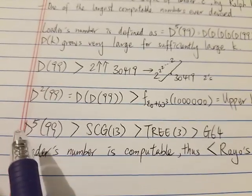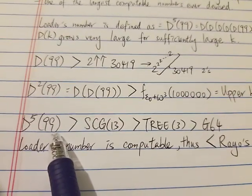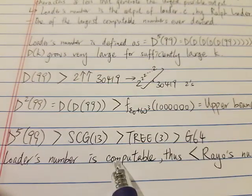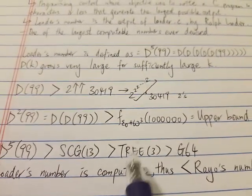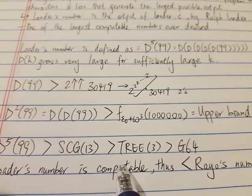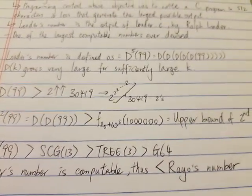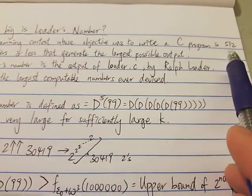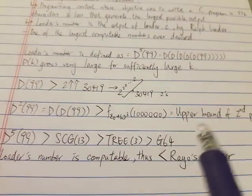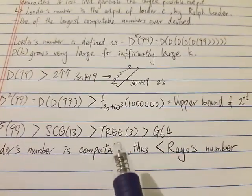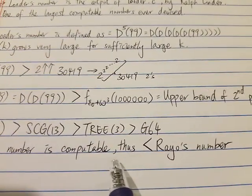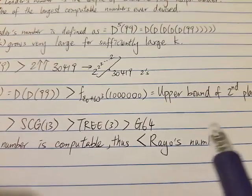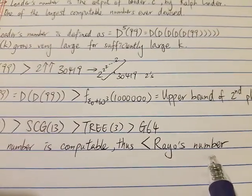Loader's number is extremely big. However, it is computable because although it's very big, it is the output of a computer program which consists of 512 characters or less. Loader's number is computable and therefore has to be much less than Rayo's number. Rayo's number is not computable.